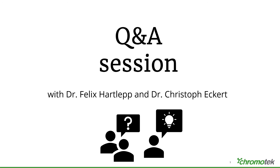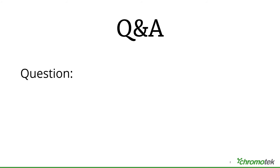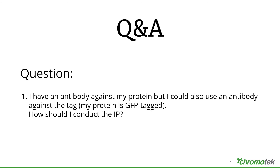A question: I have an antibody against my protein of interest, but I could also use an antibody against the GFP tag on my protein. How should I conduct the IP? If you know the antibody against the protein of interest works in IP, you can use it — but you can also use a GFP antibody or the GFP trap. I would recommend doing the pulldown with the GFP trap and using your antibody against the protein of interest for detection in Western blotting, to avoid artifacts.